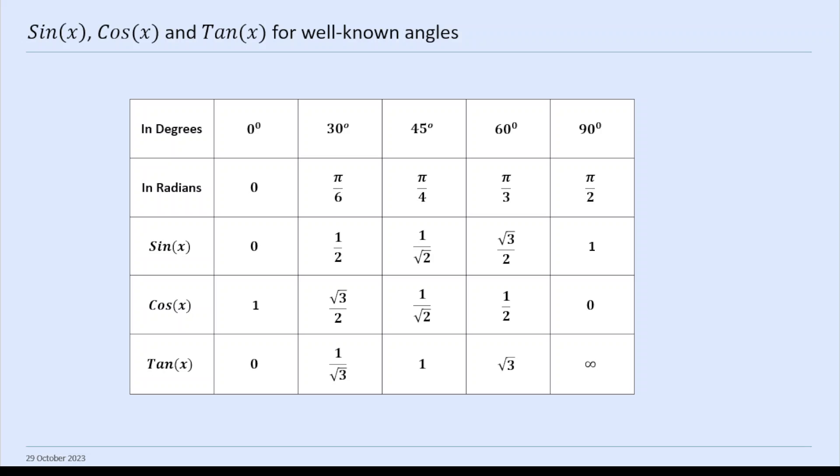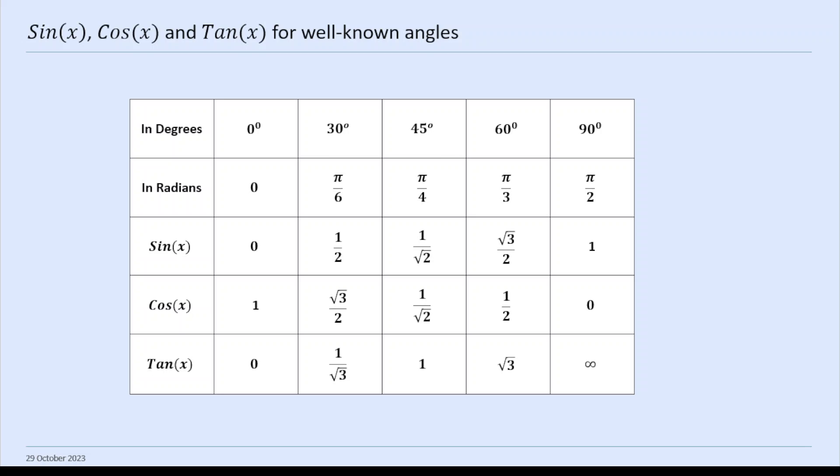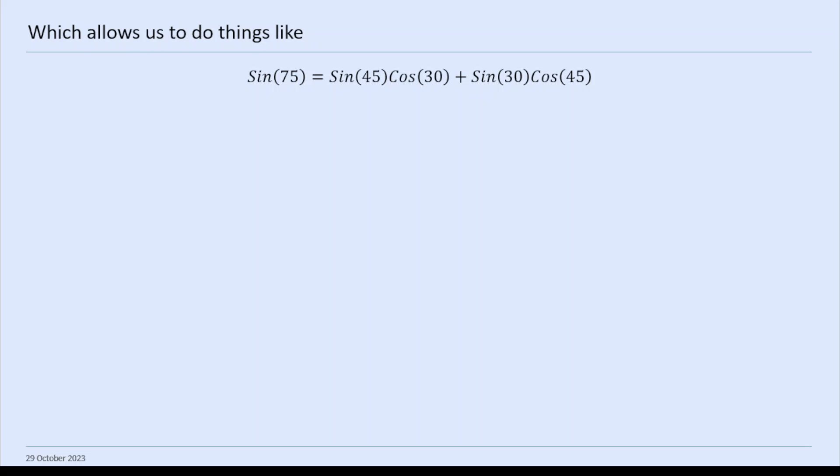So the point is, for example, we can work out sine 75. So we know sine 45, 30, and 60. We can work out sine 75 because it's just sine 45 cos 30 plus sine 30 cos 45 by the formula above.